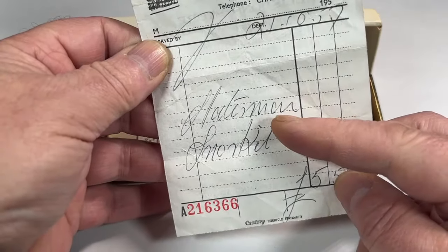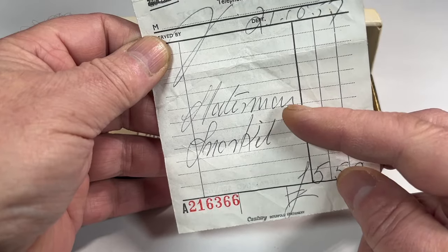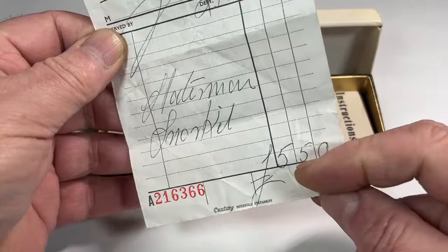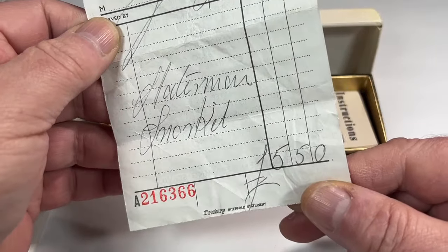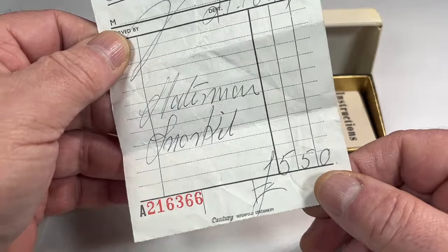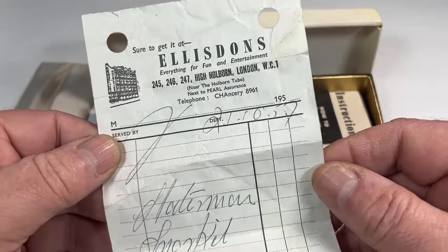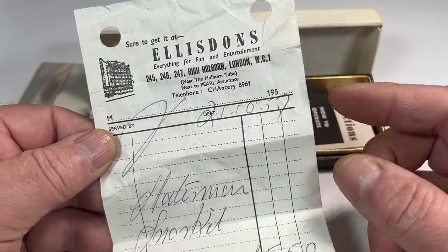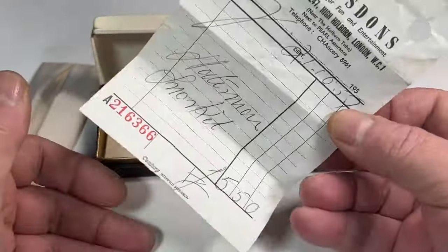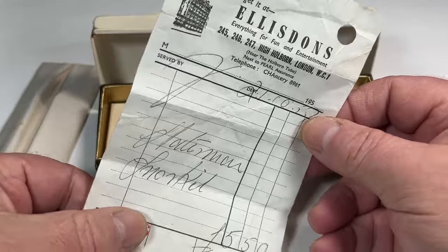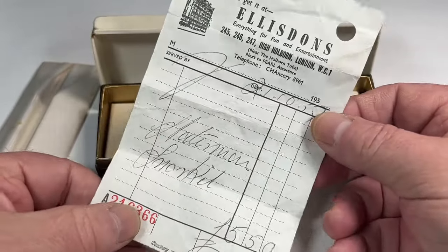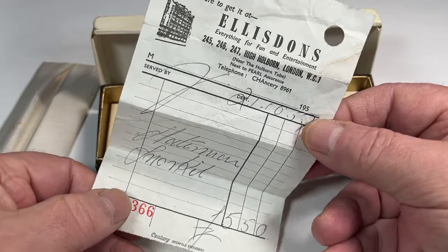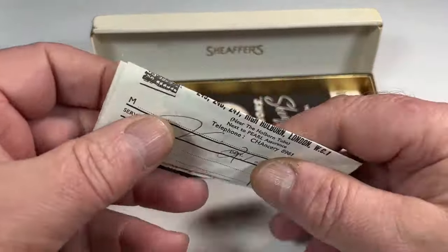Yeah, and look at that. Statesman Snorkel. Look at the price. £5.50 in the old money. And look at that, there's the date. 1957. So I think this is great memorabilia for fountain pens. You've actually got the original receipt for this pen.